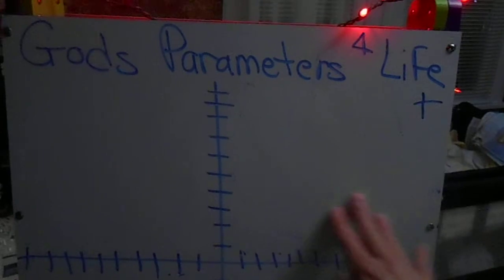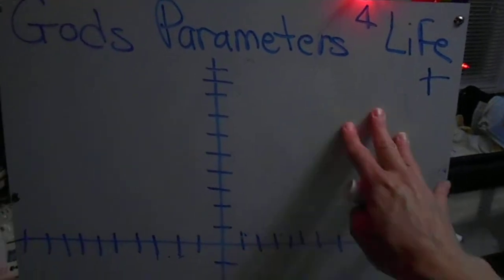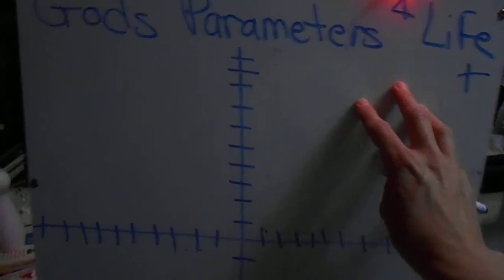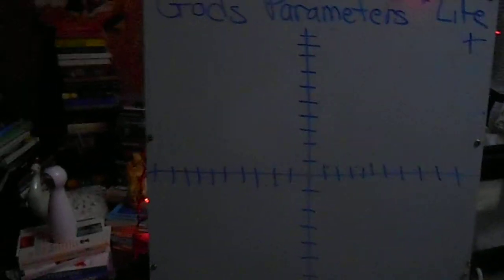This would be like white, light, positive things. This is negative, dark, evil things, and we're going to start plotting God's rules.